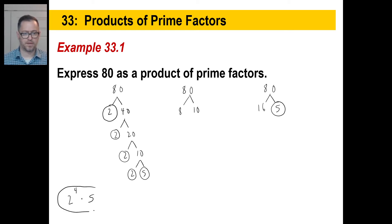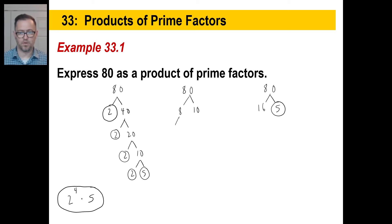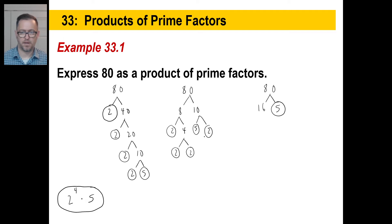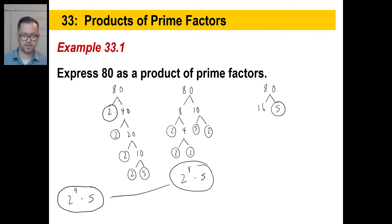This other person would go: 8 is 2 times 4, and 4 is 2 times 2. Then 10 is 5 times 2. So we've got four 2s — 2 to the 4th power — times 5. And lo and behold, this looks exactly like the first person's answer.